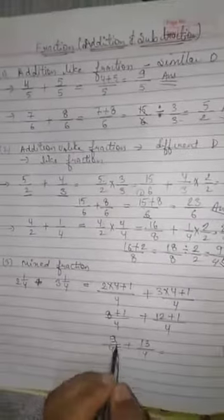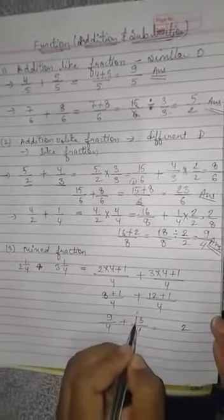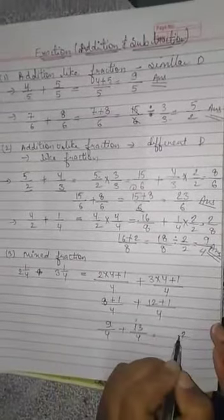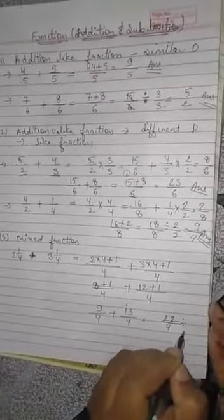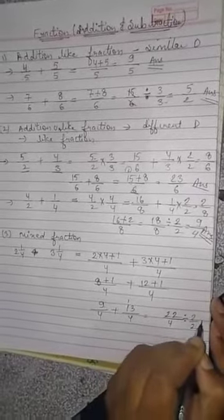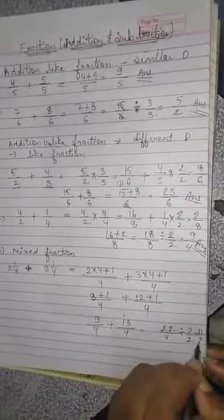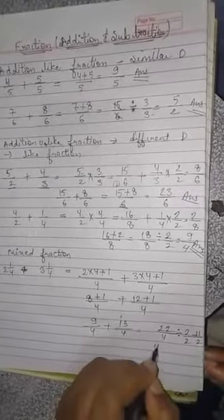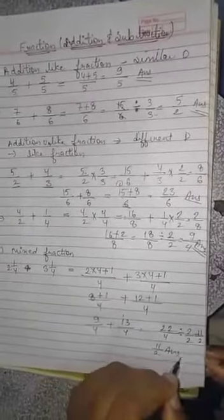13 and 9 equals 22 upon 4. We then divide 22 upon 4 by dividing both by 2, giving us 11 upon 2 as our answer.